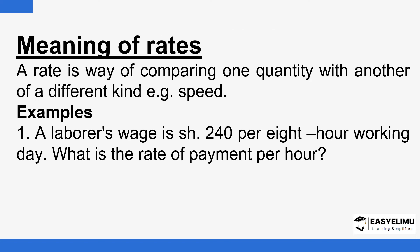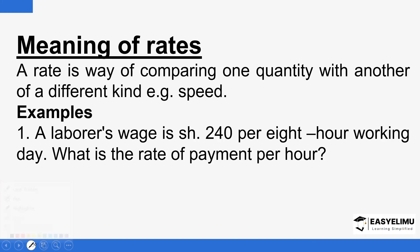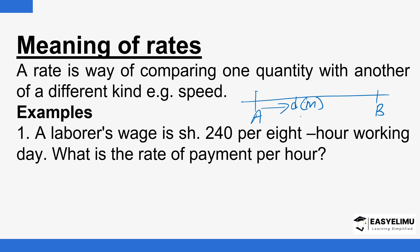So what does it mean when you talk about rate? Rate is a way of comparing one quantity with another of a different kind. For example, speed — we can be finding out if a vehicle is moving from point A to point B, covering a distance maybe in meters. It also takes time, and that time could be in seconds. So you want to find out: every second, this vehicle covers what distance?